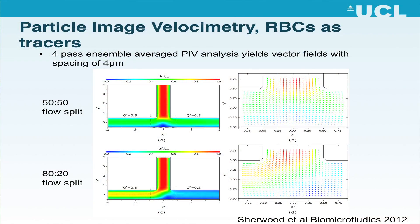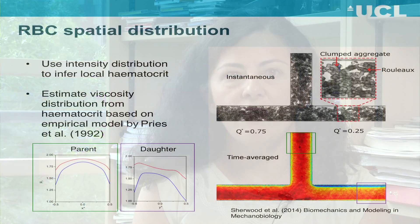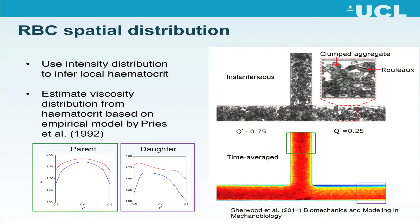Using microparticle image velocimetry, which is an established laser-based diagnostic technique, together with idealized micro-channel geometries that mimic the microvasculature, we can obtain information about the spatial distribution of the red blood cells, their velocities, as well as the velocity of the suspended medium — in other words, the plasma.